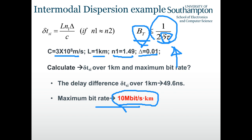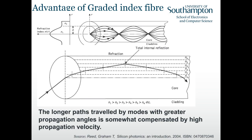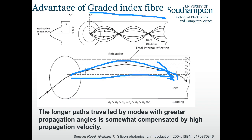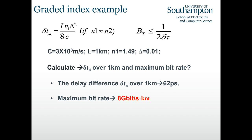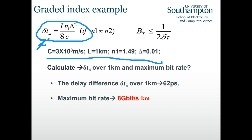With a graded-index fiber, the longer paths travel faster and the shorter paths travel slower, reducing the delay difference dramatically. Using a reference formula for graded-index fiber and the same parameters, the supportable bit rate improves to about 8 Gb/s — a very significant improvement.